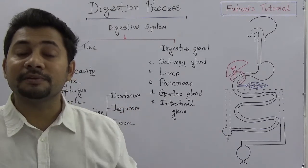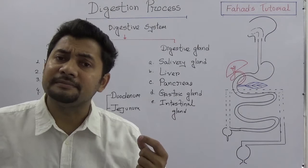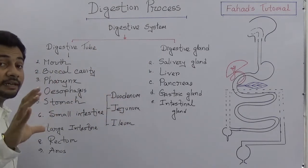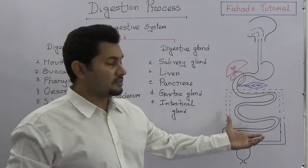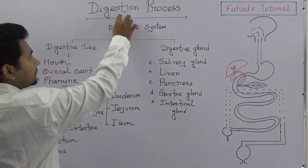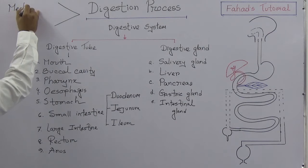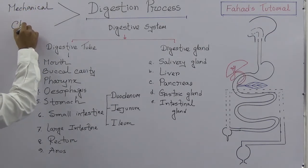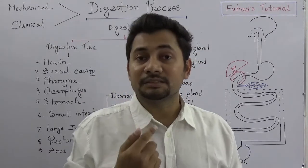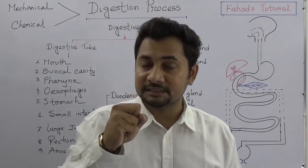Digestion is a process by which food particles are broken down for absorption, and the body gets energy. What are the types of digestive process? Digestion is divided into two types: mechanical and chemical. When we take food through our mouth and chew with our teeth, we break food down into small pieces — that is mechanical digestion.